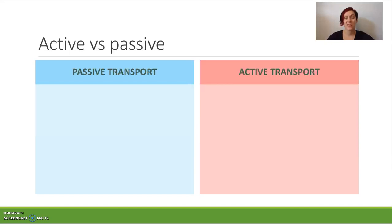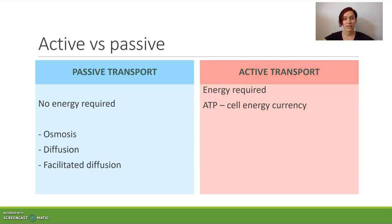So passive transport is kind of what just happens based on our concentration gradient. It doesn't require any energy and it just happens because particles are moving from an area of high concentration to an area of low concentration. So no energy is required versus that active transport where energy is required. And when we're talking energy, we're talking ATP, which is our cell's energy currency. ATP stands for adenosine triphosphate and it's produced during cellular respiration. So the types of passive transport that we're going to talk about are osmosis, diffusion and facilitated diffusion versus ion pumps and endo and exocytosis in the active transport.